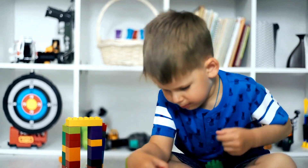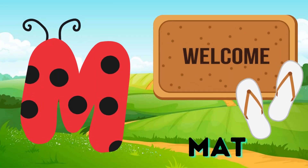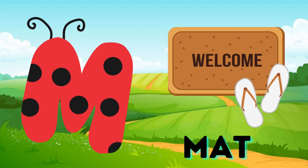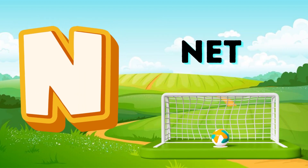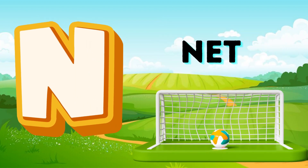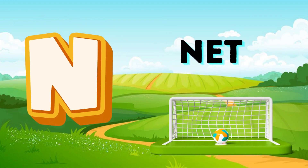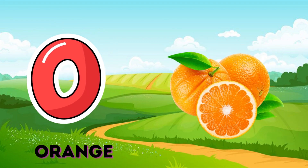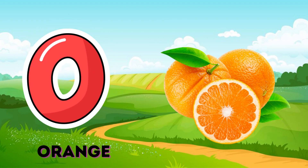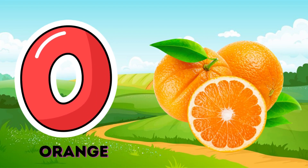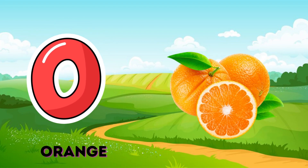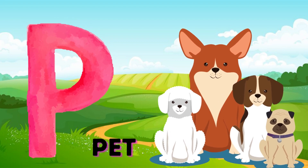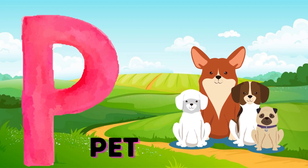M is for mat, m-m-mat. N is for net, n-n-net. O is for orange, o-o-orange. P is for pet, p-p-pet.